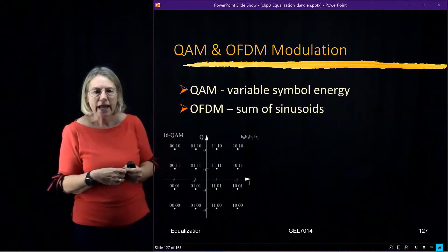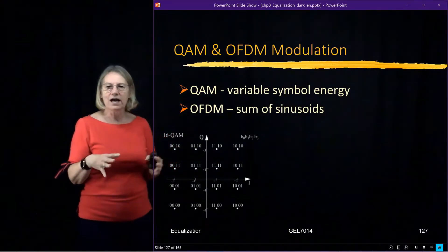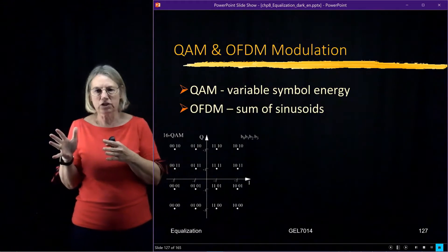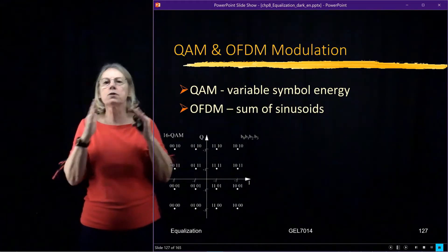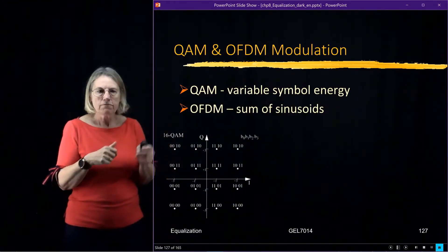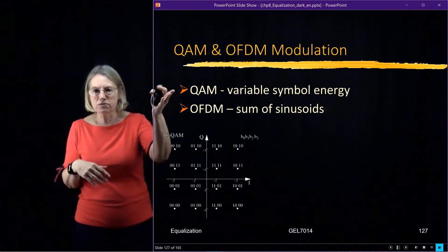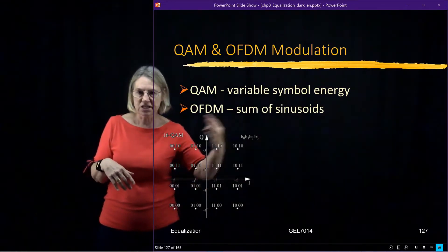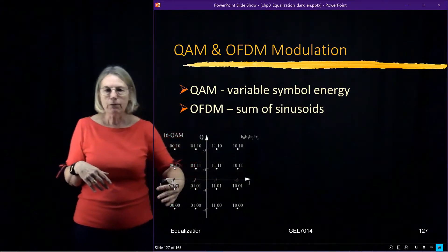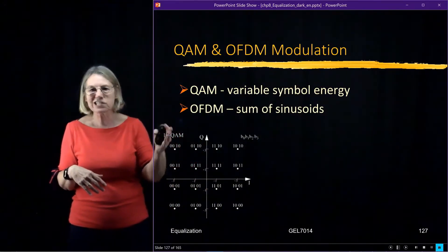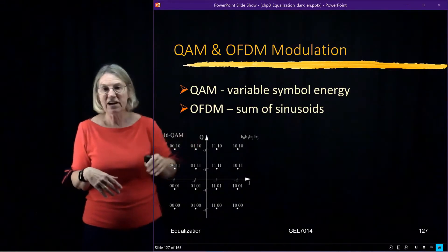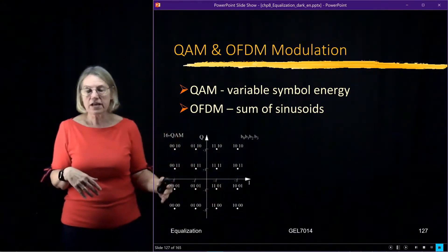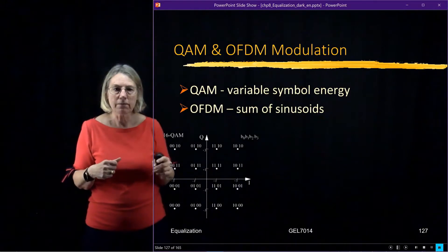Let's look at the idea of higher-order modulation and an approach which is OFDM. If I'm using QAM modulation — for example, here's 16QAM — we know that the power per symbol is varying. So it's not always the same, which means there's some variation in the power.